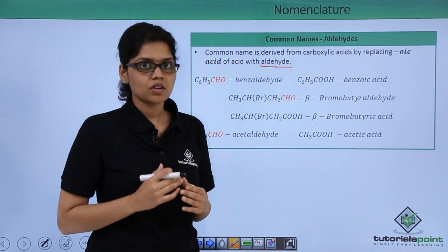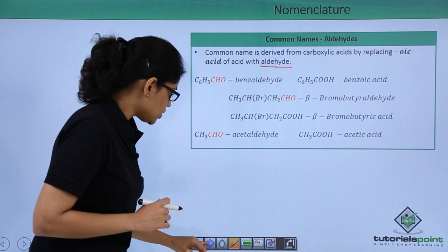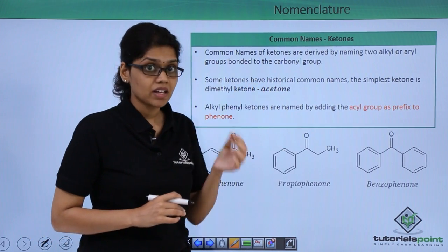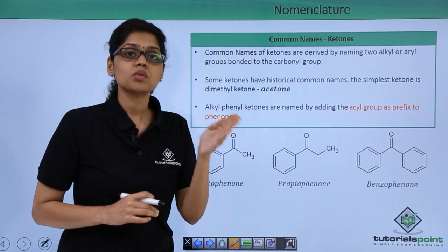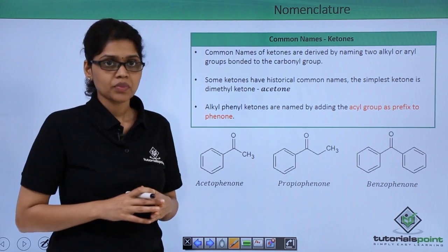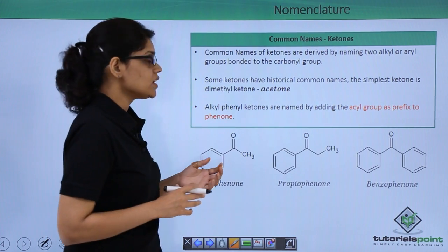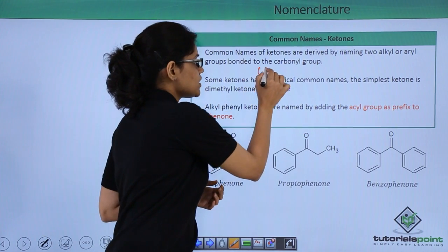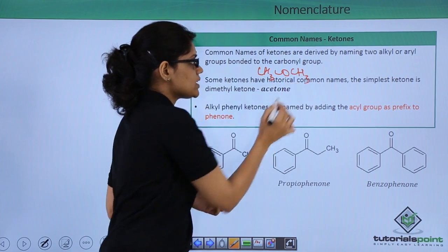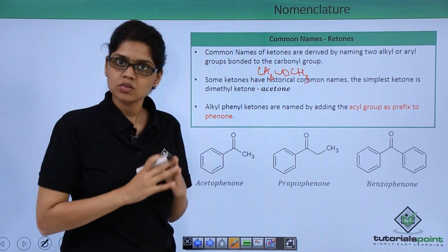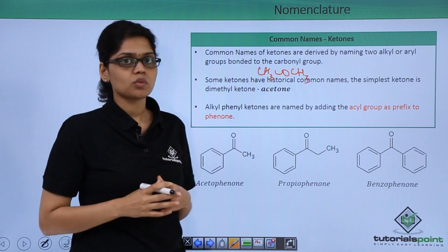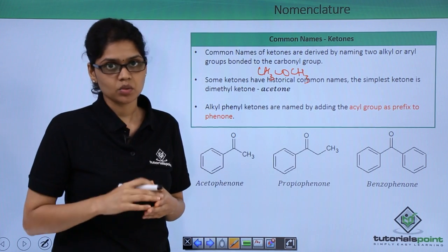Let's now see how to write the common name of ketones. In the case of ketones, the name is derived by naming the two alkyl or aryl groups attached to the carbonyl group. For example, if you have a ketone like CH3COCH3, you can see that two methyl groups are attached to the carbonyl group, so this ketone would be called dimethyl ketone.